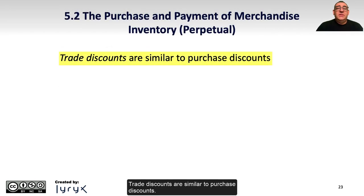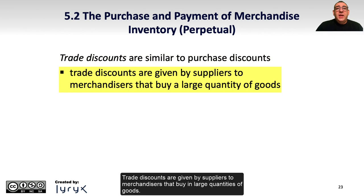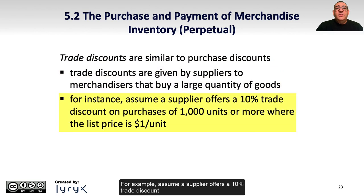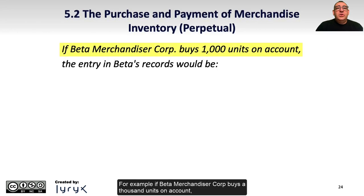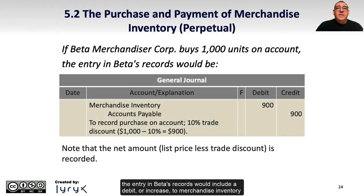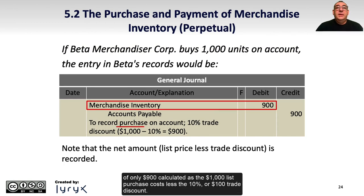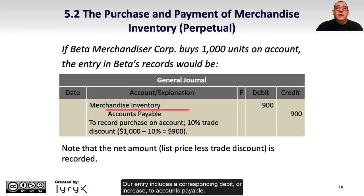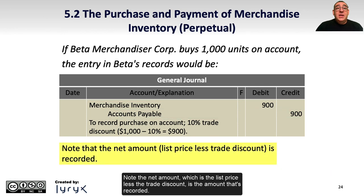Trade discounts are similar to purchase discounts. Trade discounts are given by suppliers to merchandisers that buy large quantities of goods. For example, assume a supplier offers a 10% trade discount on purchases of 1,000 units or more, where the list price is $1 per unit. If Beta Merchandiser Corp. buys 1,000 units on account, the entry in Beta's records would include a debit or increase to merchandise inventory of only $900, calculated as the $1,000 list purchase cost less the 10% or $100 trade discount. The entry includes a corresponding credit or increase to accounts payable. Note that the net amount — the list price less the trade discount — is the amount that's recorded.